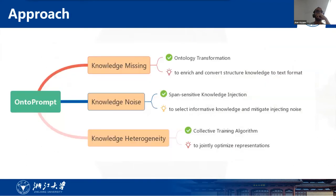In this study, to address the above-mentioned issues, we explore knowledge injection for few-shot learning with pre-trained language models and propose ontology-enhanced prompt tuning. Note that pre-trained language models can extract plenty of statistical information from large amounts of data, and external knowledge, such as knowledge graphs, is the outcome of human wisdom, which can be good prior to the modeling of statistics. Firstly, we propose ontology transformation to enrich and convert structure knowledge to text format. Specifically, we utilize pre-defined templates to convert knowledge to text as prompts. Prompt tuning can reduce the gap between the pre-training model tasks and downstream tasks. Second, we propose span-sensitive knowledge injection to select informative knowledge and mitigate injecting noise. Third, we propose a collective training algorithm to jointly optimize representations. Note that the injected external knowledge should be associated with the surrounding context. Next, we add some learnable tokens and optimize those tokens as well as injected ontology tokens.